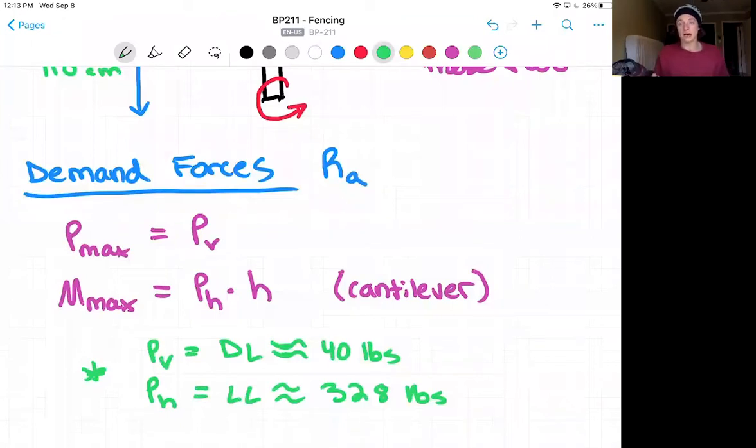...the dead load is going to be approximately 40 pounds. You see that note that I added? I forgot to add the grout fill for this specific F2 detail. And the live load is going to be approximately 328 pounds when we use the distributed calculation.